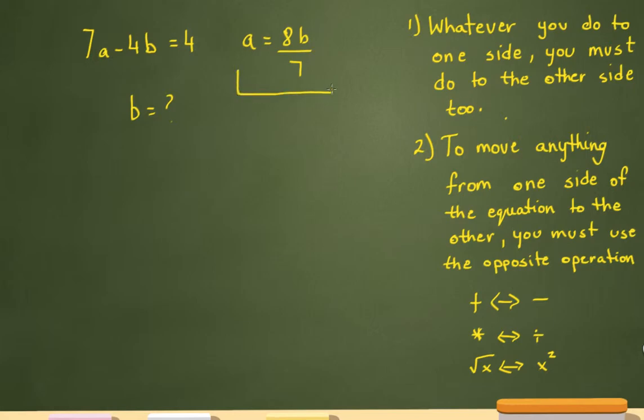Since the question tells me that the value of a is 8b over 7, instead of the a, I can substitute that with 8b over 7, which would mean 7 times 8b over 7 minus 4b equals 4.